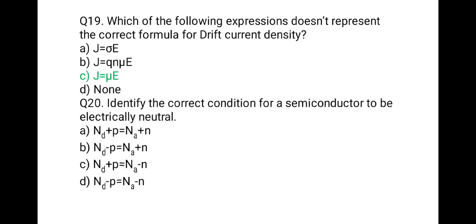Bonus question: Identify the correct condition for a semiconductor to be electrically neutral. The correct answer is: ND plus P equals NA plus N. ND is the number of donors plus P the number of holes, equal to NA the number of acceptors plus N the number of electrons. This means both positive and negative charges are equal, so the semiconductor is electrically neutral.